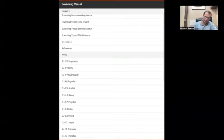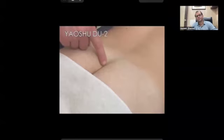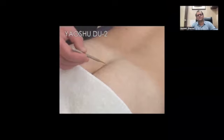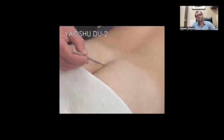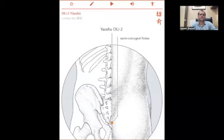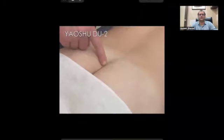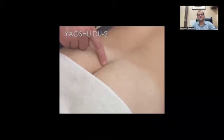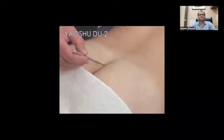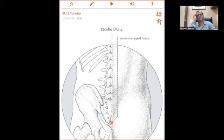So let's see here. Governing vessel 20 is well known point. Let's see the location of governing vessel 2. This is our governing vessel 2. Where the sacral bone is ending. Where sacral bone ends, after that tail bone is starting. The sacral bone is ending, tail bone is starting. Know about this. That is Du2.